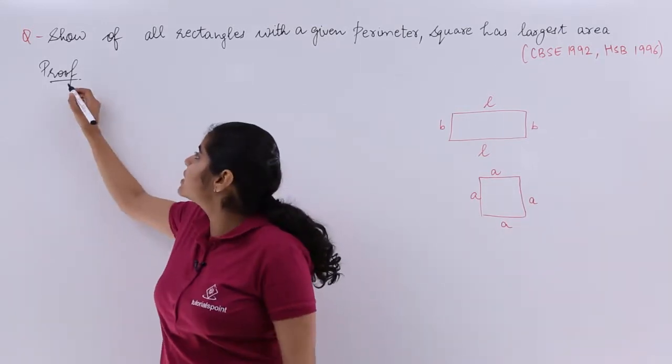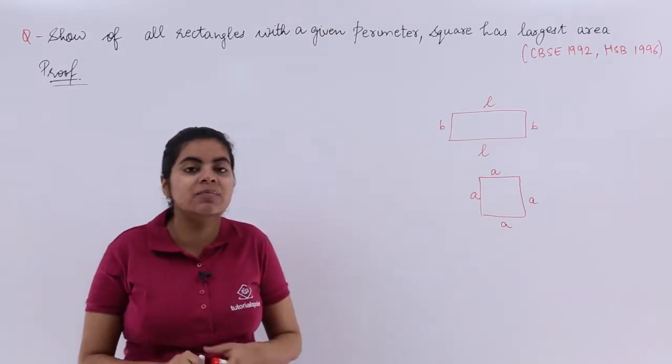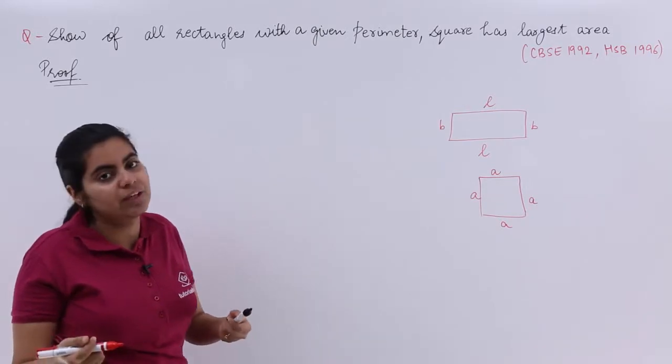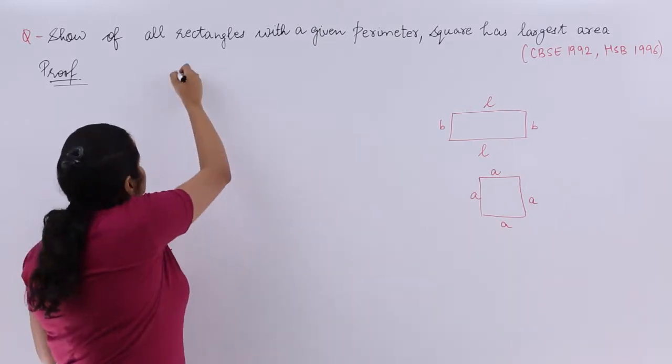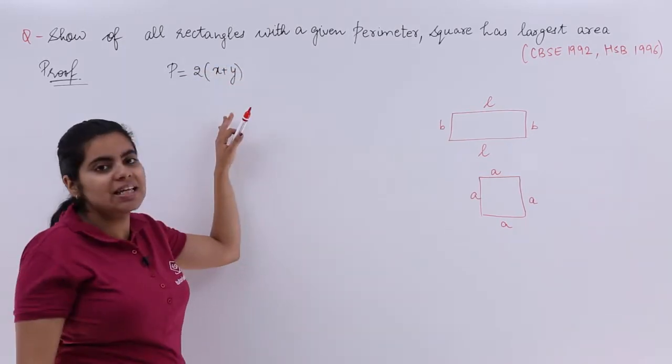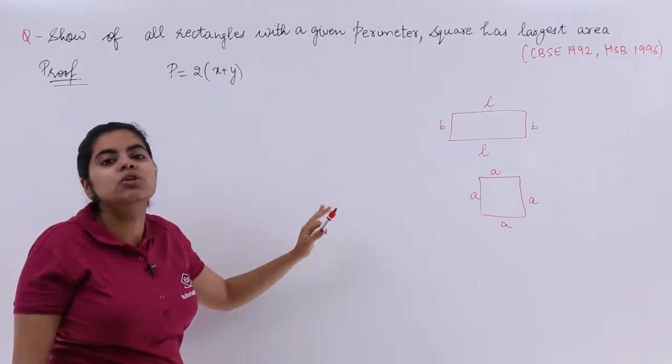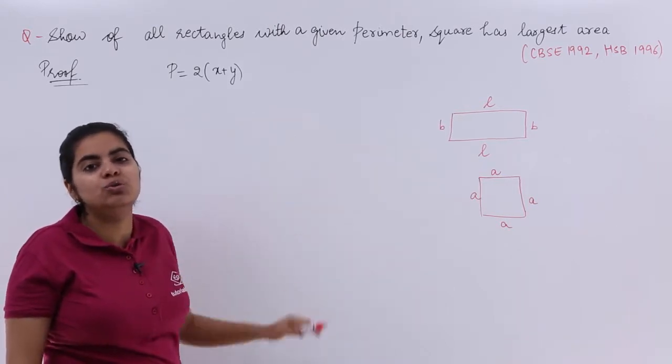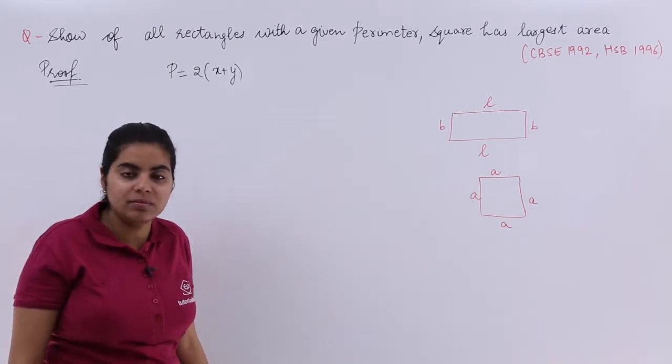Let's start with the proof and understand what the question says. It says rectangles have been given of a given perimeter. So let perimeter P equal twice of length plus breadth. If I name length as X, breadth as Y, my solution would be perimeter equals 2 into X plus Y.